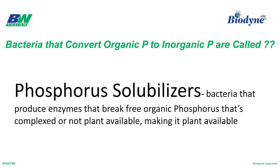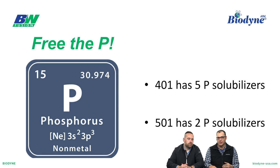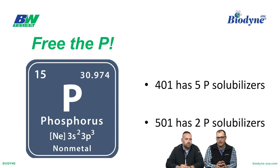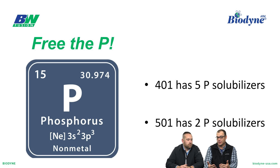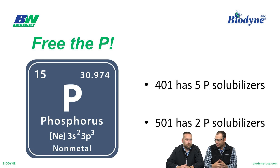Bacteria that convert organic phosphorus to inorganic phosphorus are called phosphorus solubilizers. Those are bacteria that produce enzymes that break free organic phosphorus that's complexed or not plant available, making it plant available. That initiative that Bodie mentioned is called 'Free the P' — we want to make phosphorus that's not available to the plant become available. Here's what I love about our company's transparency: 401 has five phosphorus solubilizers in it. 501, or meltdown, when you use those together, has two phosphorus solubilizers in it. So we're coming to the field with a multifaceted approach to getting phosphorus released and making it available to the plant.